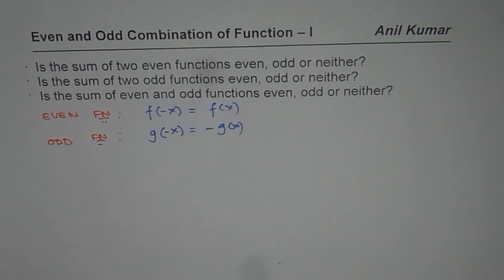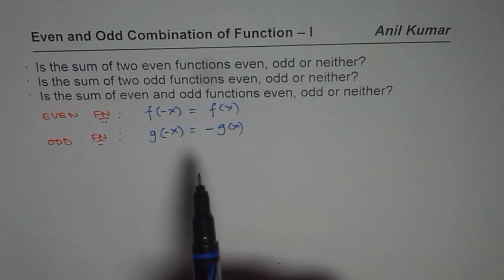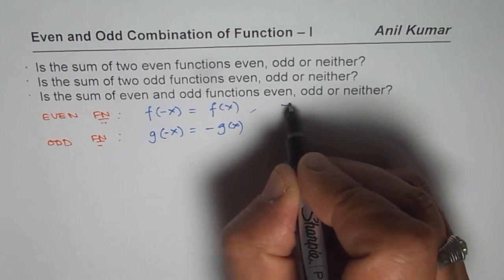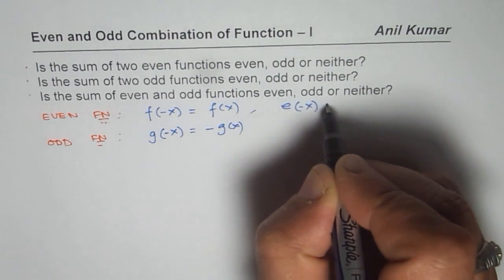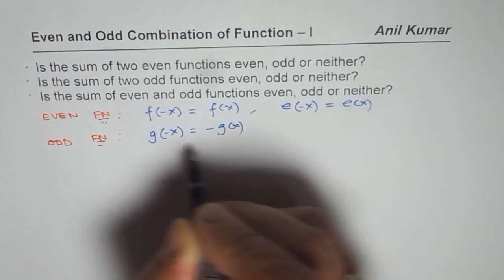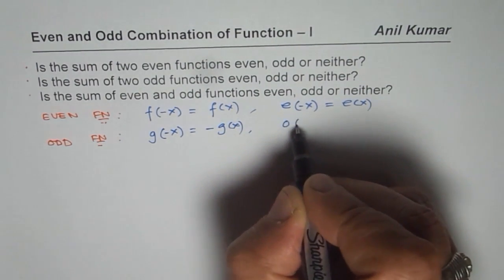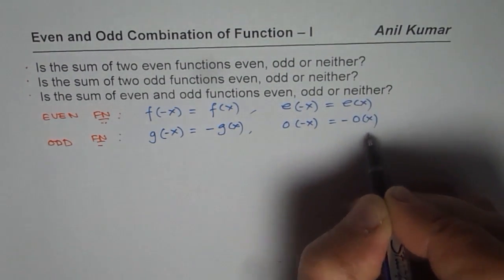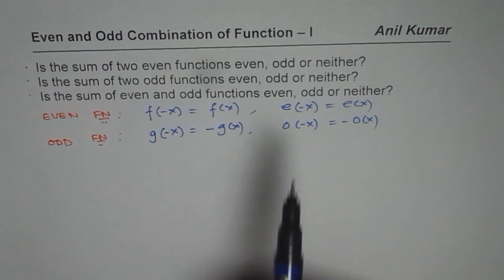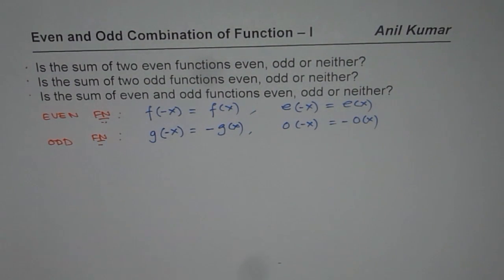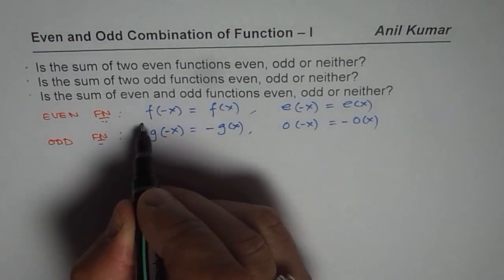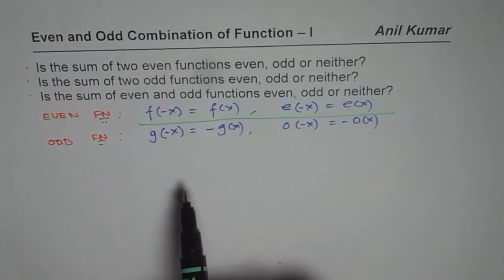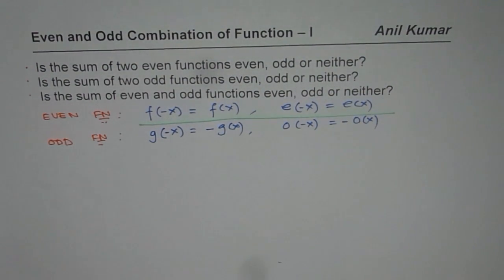To experiment with this, we will consider two different functions of each type. We will take f(x) and e(x) as even functions, so e(-x) = e(x). And we will have g(x) and o(x) as odd functions, so o(-x) = -o(x). So we have four functions, two even and two odd.